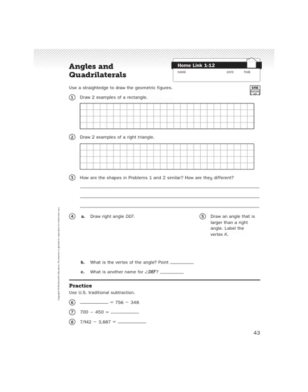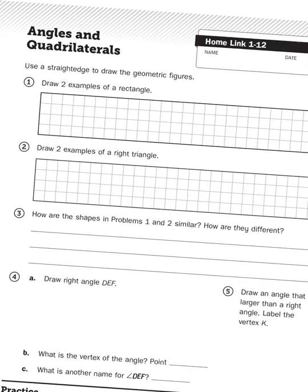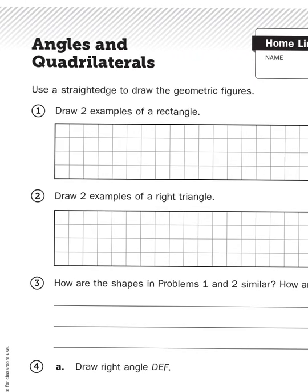Let's take a look at the first couple of problems. Number 1 says draw two examples of a rectangle. So I'm going to use the grids provided to help me draw my polygon. So I can start right here, just to make a small rectangle that is 3 squares wide by 2 squares high.